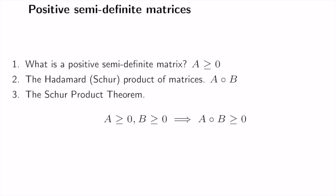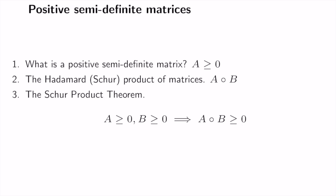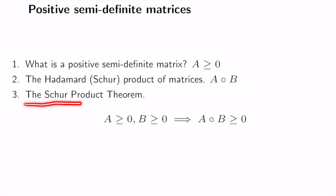In this video, we study positive semi-definite matrices. First, we define positive semi-definite matrices based on two equivalent conditions and show their equivalence. Then we define a new type of matrix product called the Hadamard product, also known as the Schur product. Finally, we prove the Schur product theorem: if two matrices are positive semi-definite, then their Hadamard product is also positive semi-definite.